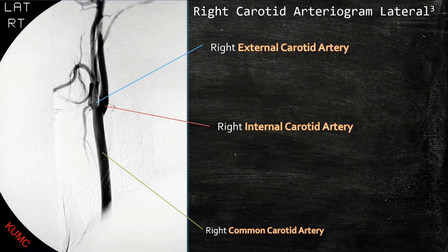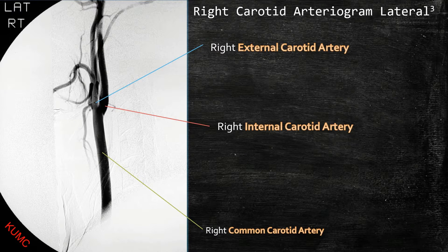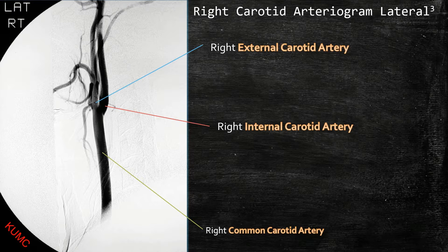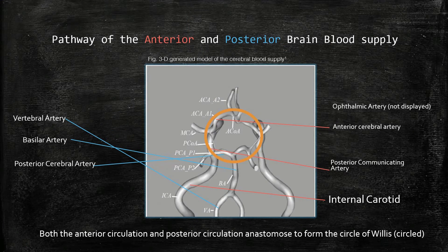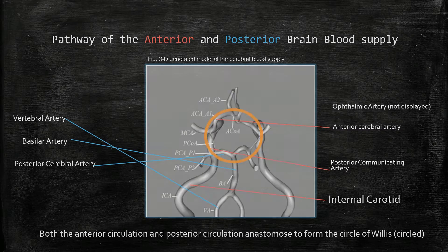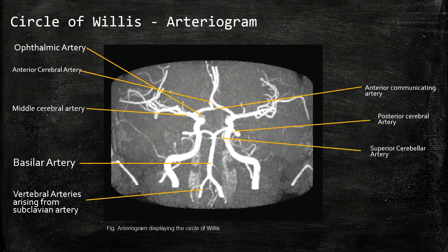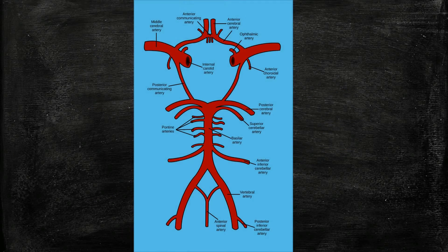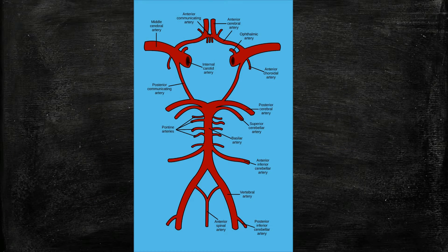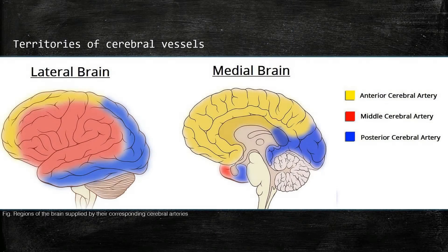Here you can see a bifurcation of the common carotid artery. This is a 3D image of the circle of Willis. And here is the arteriogram of the circle of Willis. This is the classic image of the circle of Willis. And this diagram shows the territories of blood supply of the cerebral arteries.